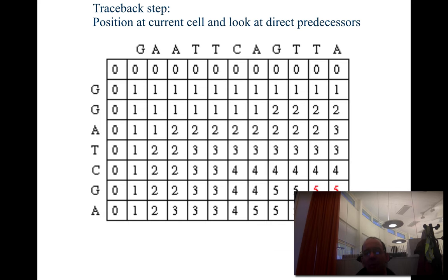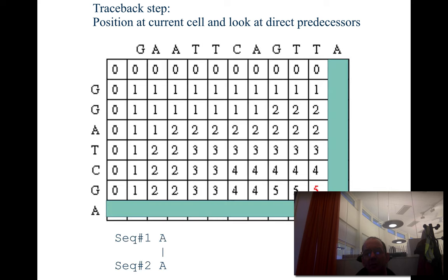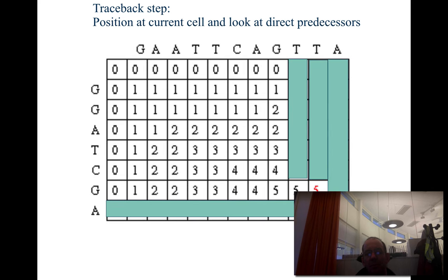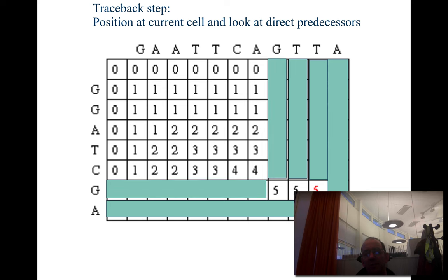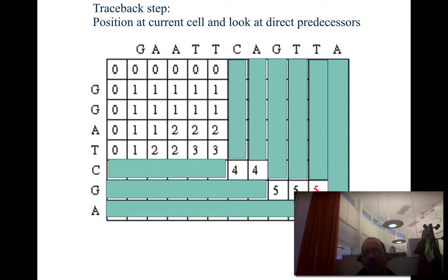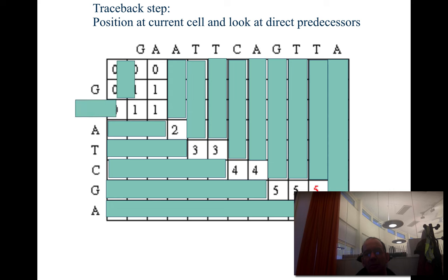You have to do what is called a traceback to figure out how you got there. You go back from the score of 6. The 6 comes from 5 diagonally. The 5 could come from either another 5 or from the 4 on top. Following the traceback, this 5 comes from the 4 on top. The 4 comes from another 4, which comes from 3, then another 3, then 2, then 1.